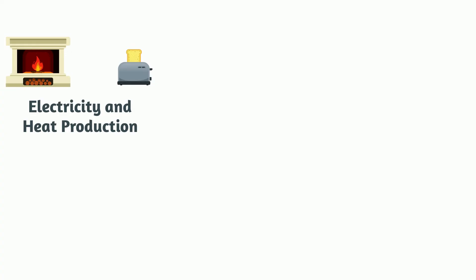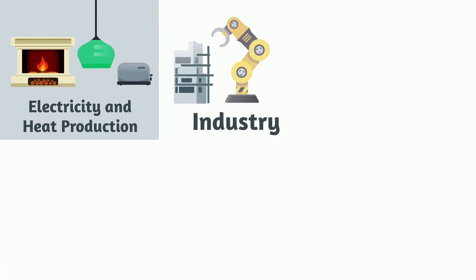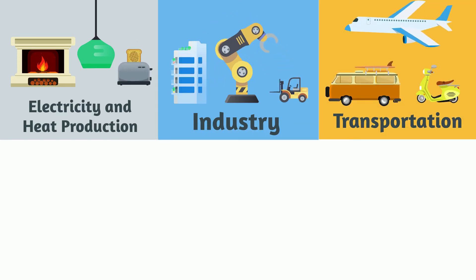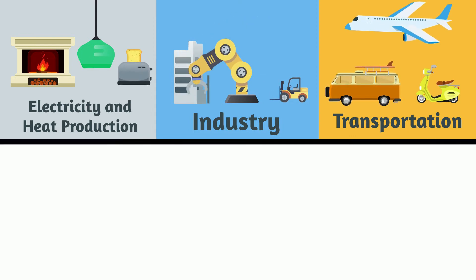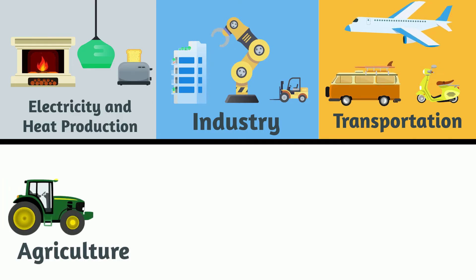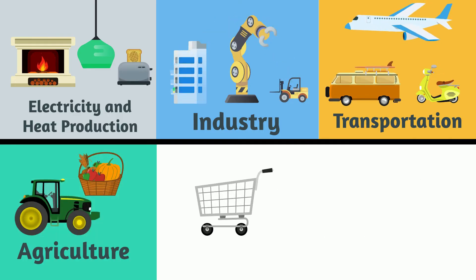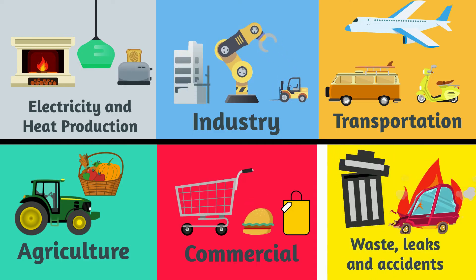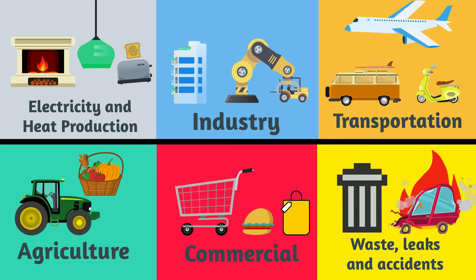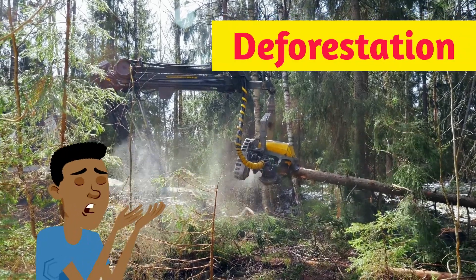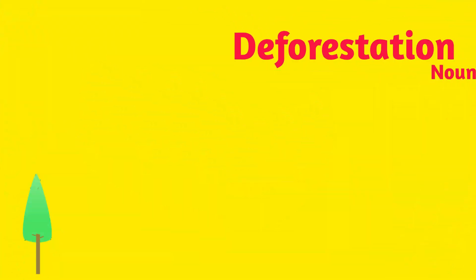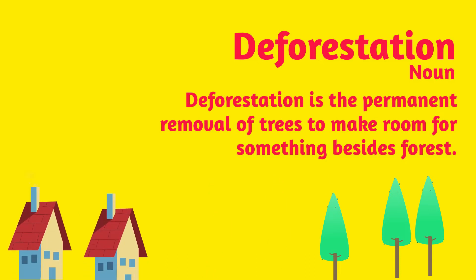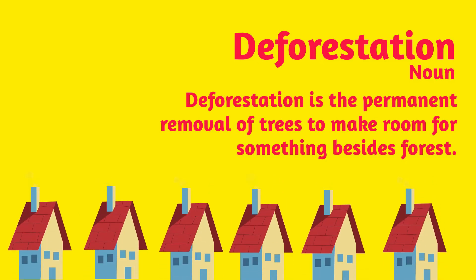We are contributing to global warming through the following ways: electricity and heat production, industry like manufacturing, transportation which produces a lot of gases, agriculture which causes a lot of waste, the commercial industry which also contributes to gas production, and waste, leaks and accidents. Another huge problem contributing to the issue is deforestation — the permanent removal of trees to make room for something besides a forest. Deforestation is happening all around the world.